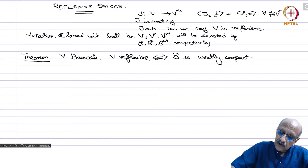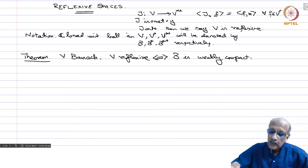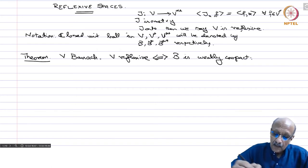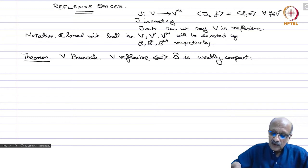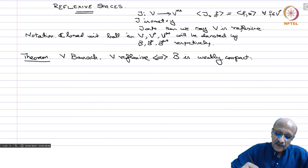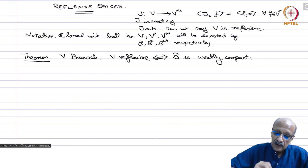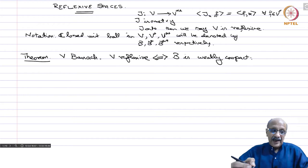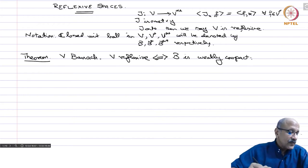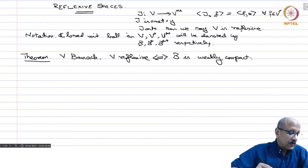That means compact in the weak topology. You know that B can never be norm-compact in infinite dimensions. And if you are in V star, then you know B star is weak-star compact. But for reflexive spaces, the closed unit ball is weakly compact, and that characterizes reflexive spaces.